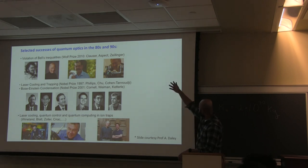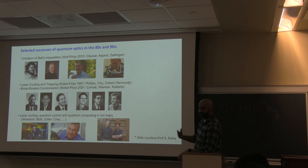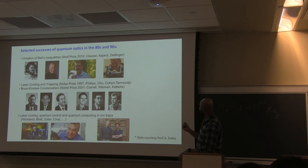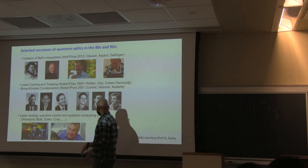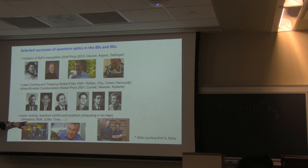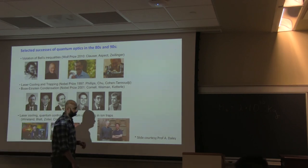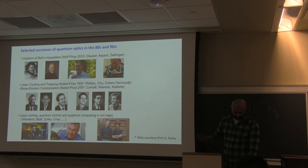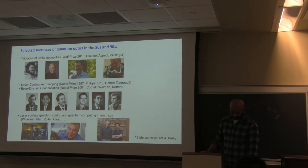A number of Nobel Prizes and prestigious prizes in physics have been awarded for these developments coming out of quantum optics, atomic physics, and laser physics. More recently, laser cooling, quantum control, and quantum computing in ion traps was done by Wineland, Reiner Blatt, and Peter Zoller. That led to the current flourishing of quantum computing. I've left out more recent developments including various superconducting qubits, solid-state qubits, and so on.